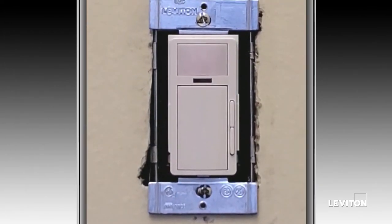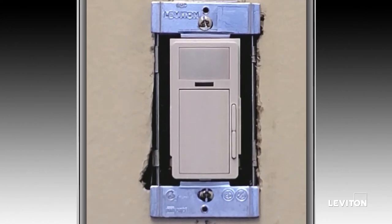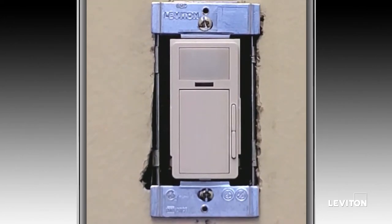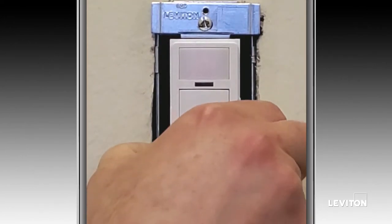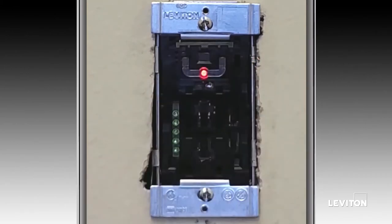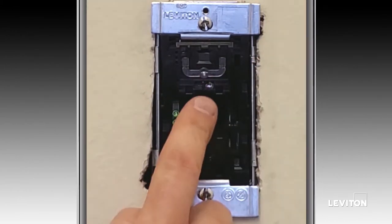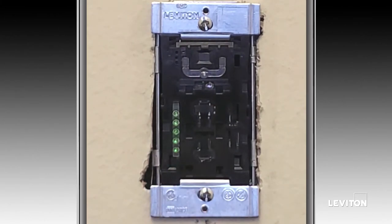With the wall plate removed, next you'll need to remove the front face of the sensor. To do that there are two tabs on the bottom that you pinch in, lift up, and pull down, which will expose two buttons underneath the sensor faceplate.